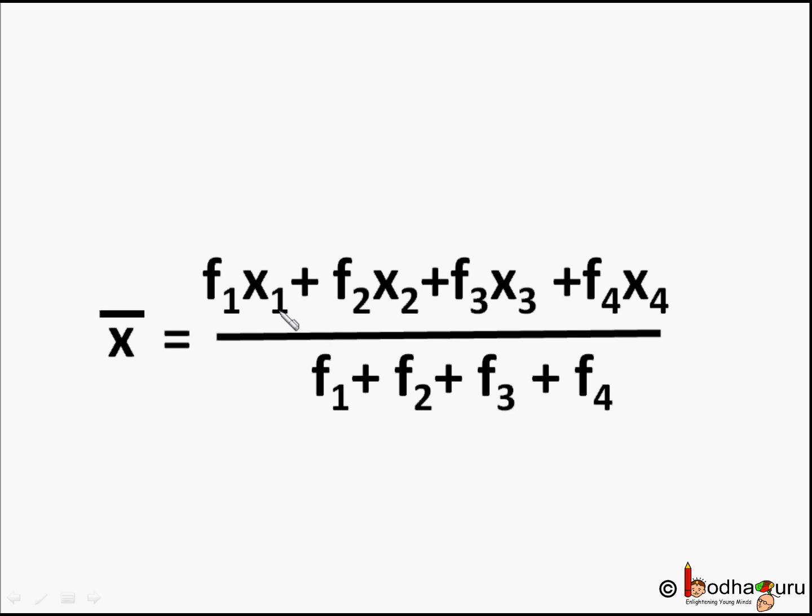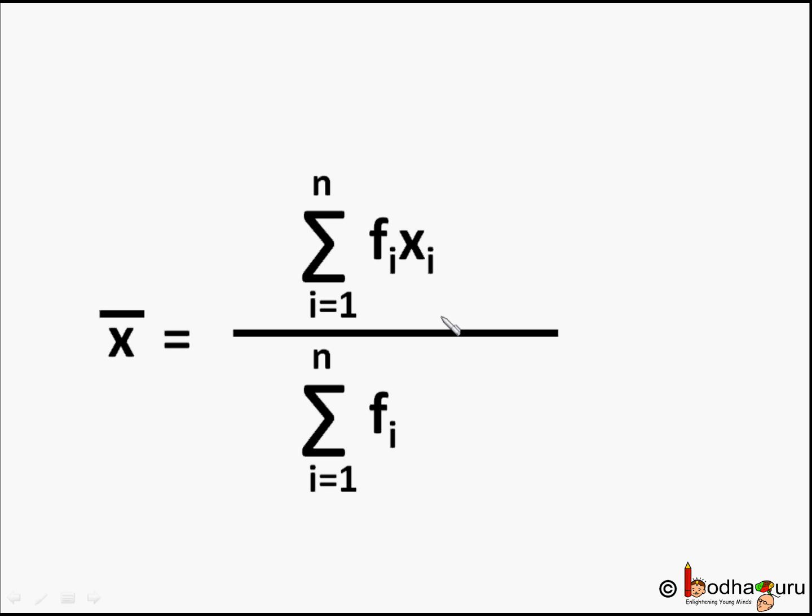In a generic way for such cases of ungrouped frequency distribution where number of observations is n, the formula of mean is rewritten as sum or sigma of fi into xi where i varies from 1 to n divided by number of observations, that is sum of all the frequencies.